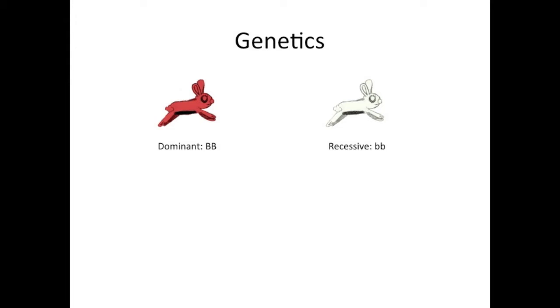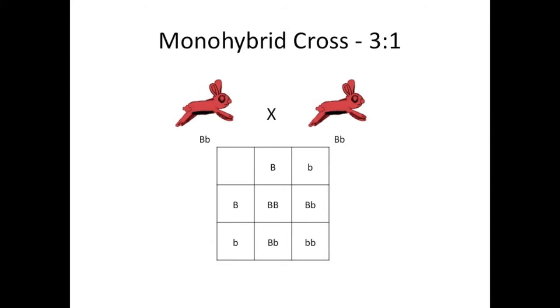Red is dominant, capital B, and white is recessive, lowercase b. Both of these are homozygous individuals, and if you cross them together, you'd get a heterozygous red bunny. Right, basic stuff. Here's some more basics, but it's good review.